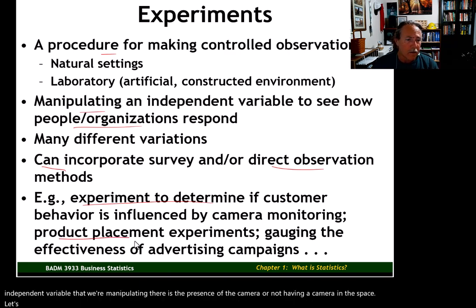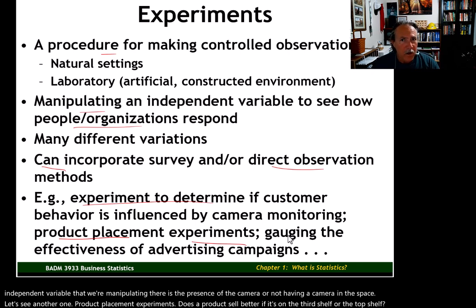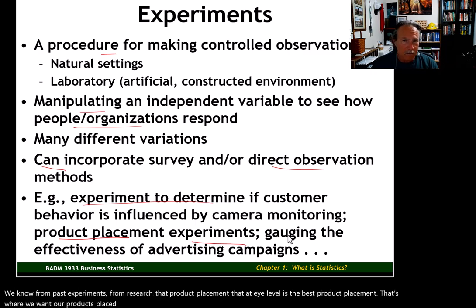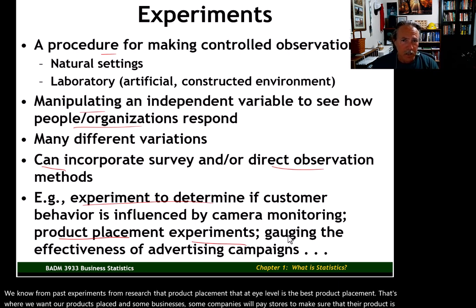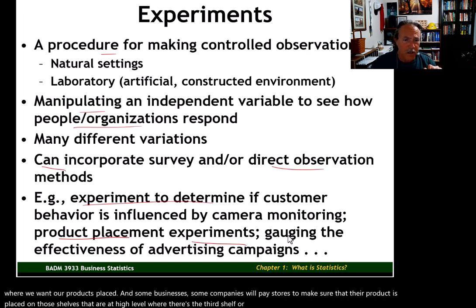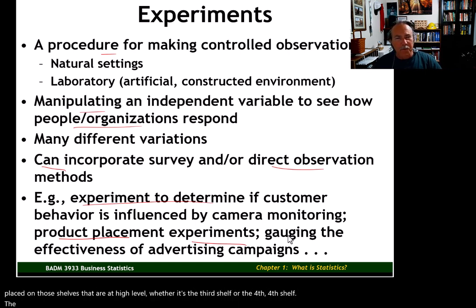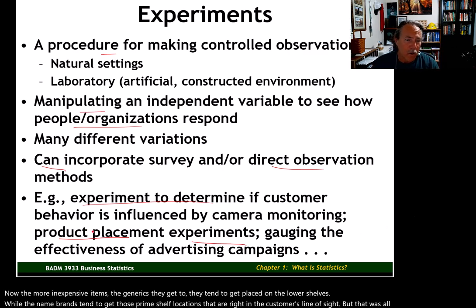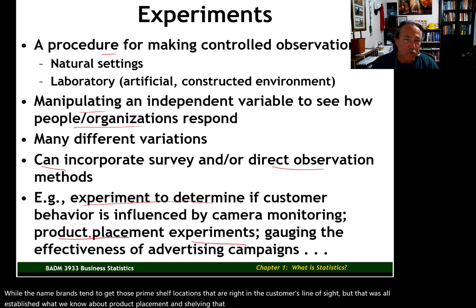Another example is product placement experiments — does a product sell better on the third shelf or the top shelf? We know from past research that product placement at eye level is the best. Some companies will pay stores to ensure their product is placed on those eye-level shelves. More inexpensive generic items tend to get placed on lower shelves, while name brands get those prime shelf locations in the customer's line of sight. All of what we know about product placement was established through experimental research.